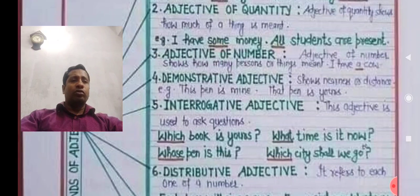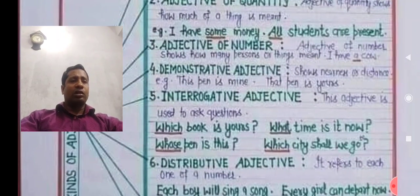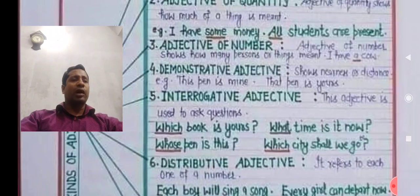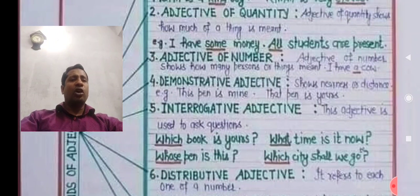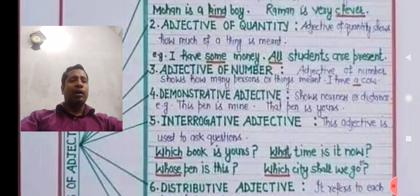Adjective of number shows how many persons or things are meant. For example: 'I have a cow' — 'a' means one, indicating the number. 'I want to take a cup of tea' — a cup of tea means one cup of tea, indicating the number of tea. That is the adjective of number.